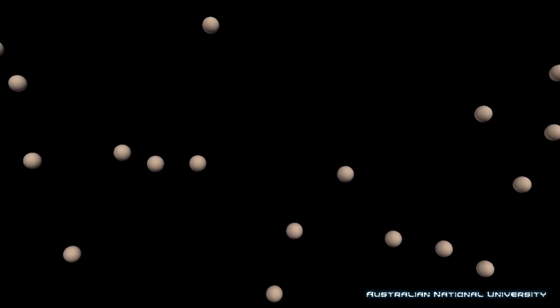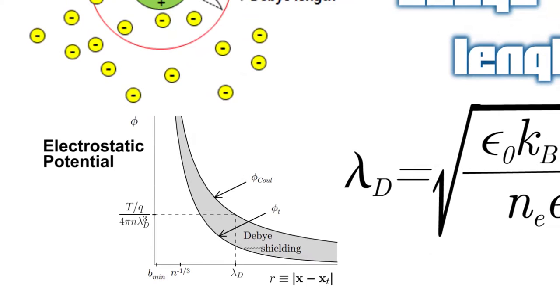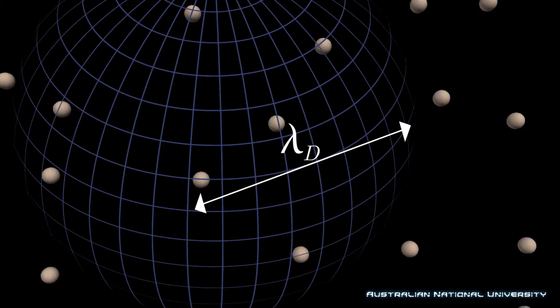If we want to get properly technical, plasmas have to satisfy three criteria. The first is called the plasma approximation, and it says the charged particles have to be close enough together such that they will interact with lots of different particles rather than just their nearest neighbor. How close is close enough? The Debye length is the distance over which an ion's electrostatic effects are essentially screened or shielded out by the much lighter electrons. So for collective effects we need to have lots of ions within a Debye sphere. The second criterion is that we don't want to have to worry about effects of the edges of the plasma, so it has to be a lot bigger than a Debye length.